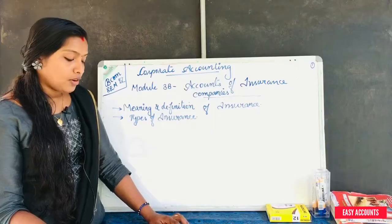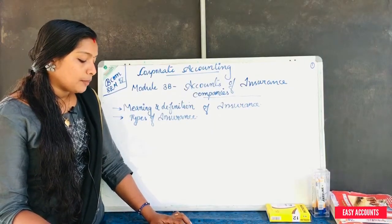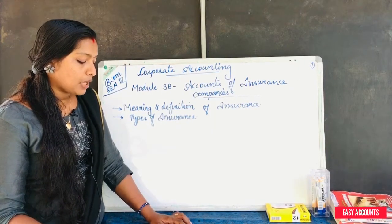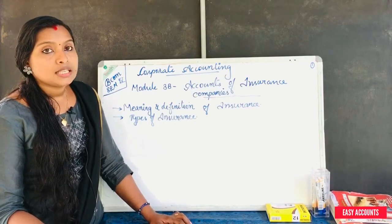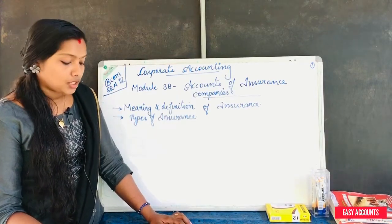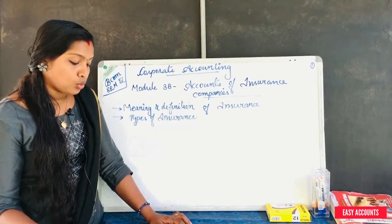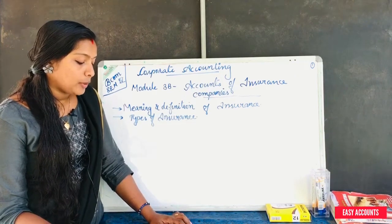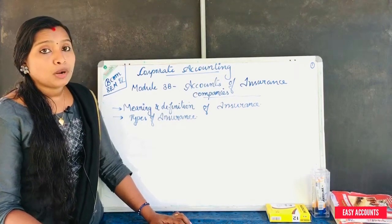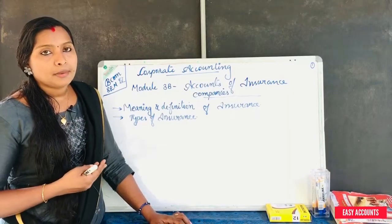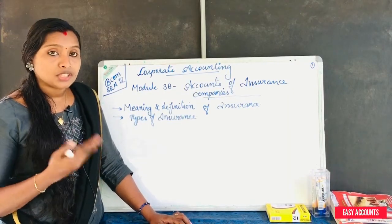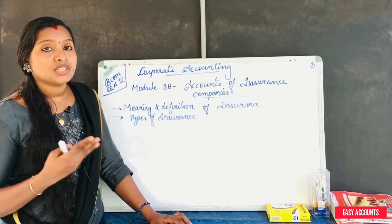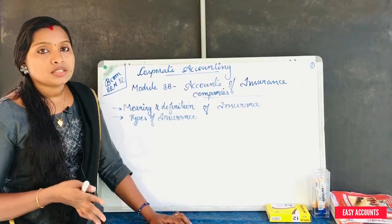After the implementation of the Insurance Amendment Act 2002, private sector companies have been allowed to conduct insurance business. Now we have many private life insurance and general insurance companies operating.